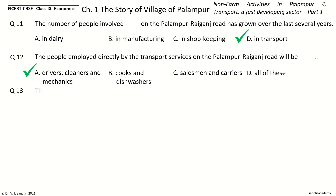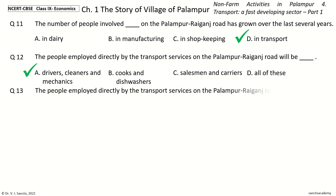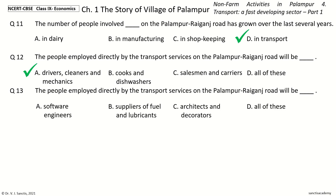Question 13: The people employed directly by the transport services on the Palampur-Raiganj road will be dash. The options are: Software engineers, Suppliers of fuel and lubricants, Architects and decorators, All of these. And the answer is Suppliers of fuel and lubricants.